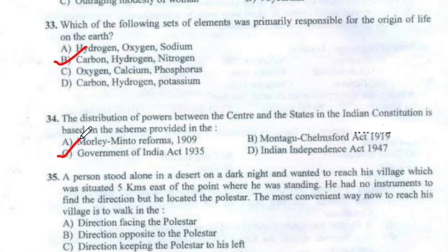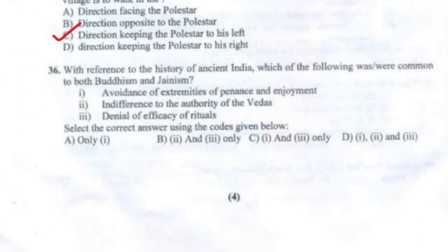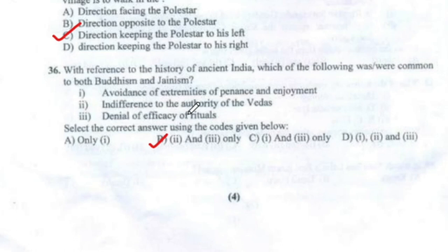Question 35: The correct answer is Option C. Question 36: The correct answer is Option B — with reference to the history of ancient India, what was common to both Buddhism and Jainism is indifference to the authority of the Vedas and denial of the efficacy of rituals.